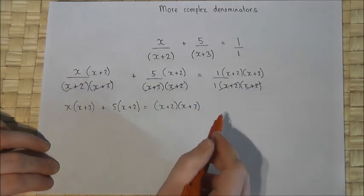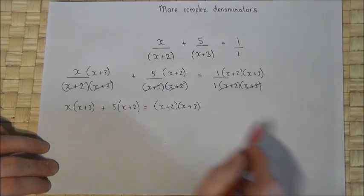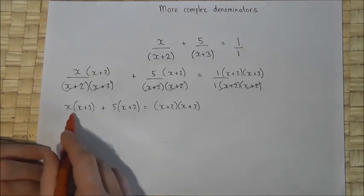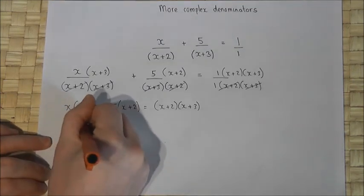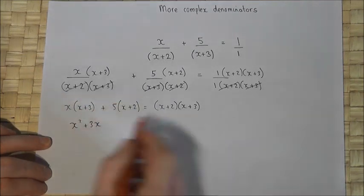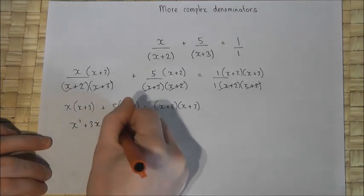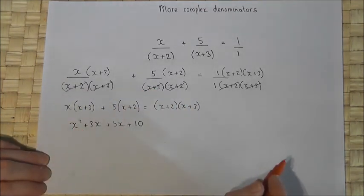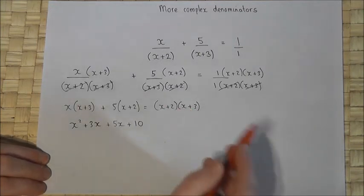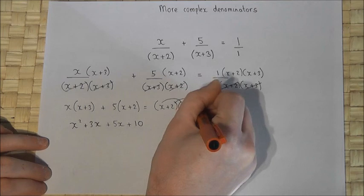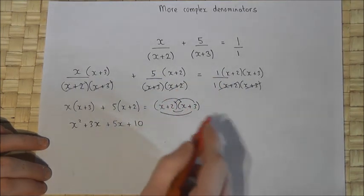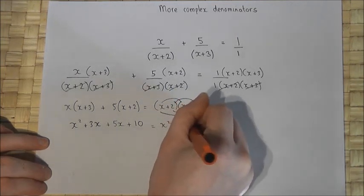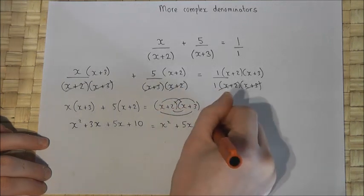When there's a 1, there's no need to write it as it's just 1 times, which won't change the brackets. The next step is to expand all brackets: x times (x+3) gives x squared plus 3x; 5 times x is 5x, 5 times 2 is 10. Then expanding (x+2)(x+3): x times x is x squared, the middle terms give 2x and 3x, and 2 times 3 is 6.